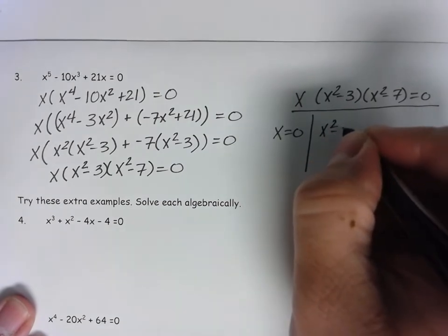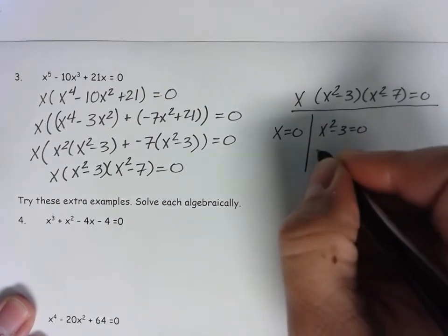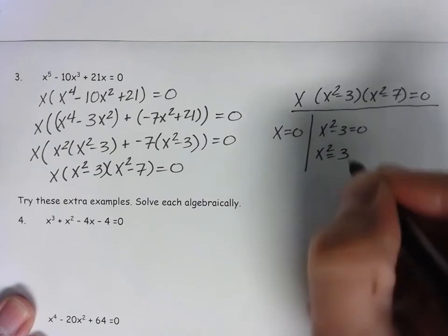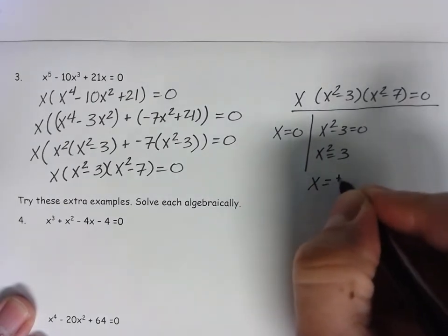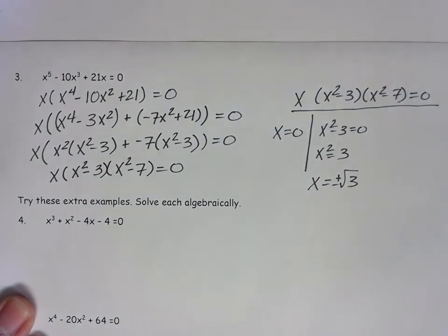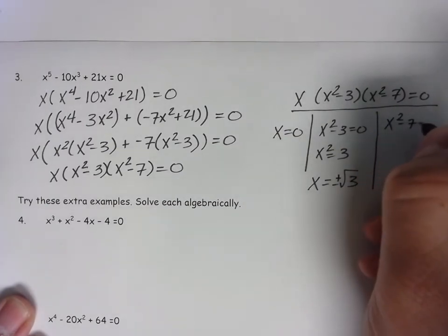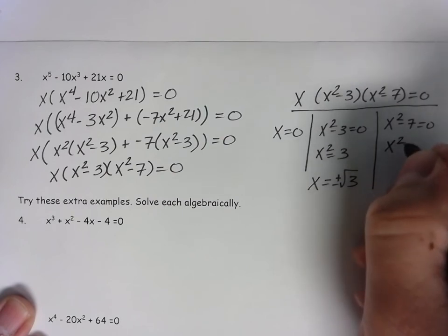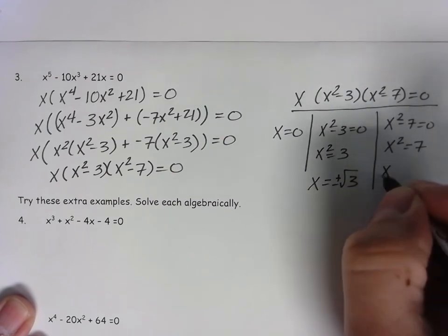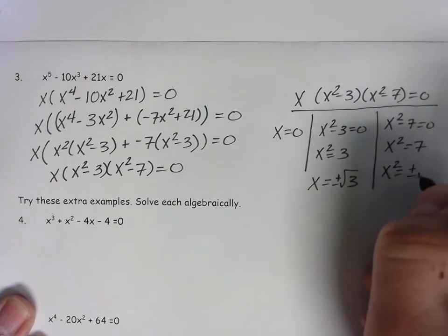x squared minus 3 equals 0, or x squared equals 3, or x equals plus or minus radical 3. x squared minus 7 equals 0, x squared equals 7, x equals plus or minus radical 7.